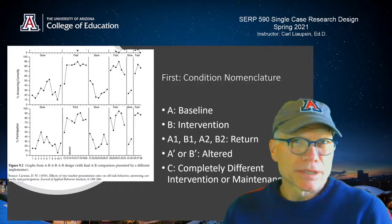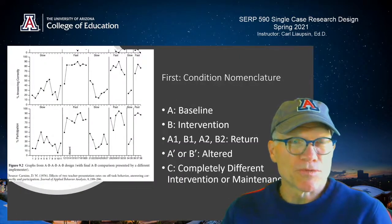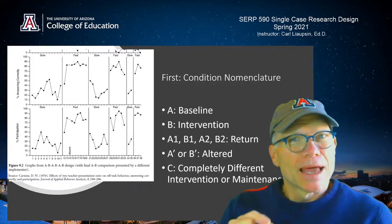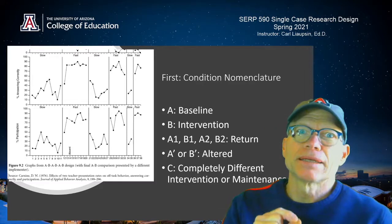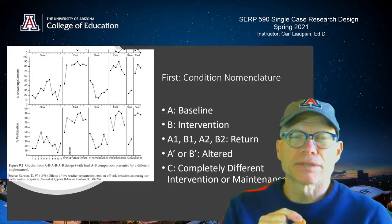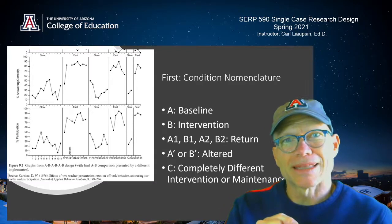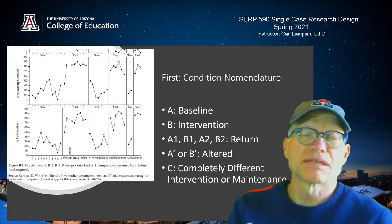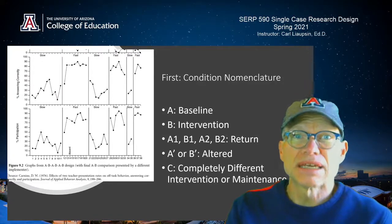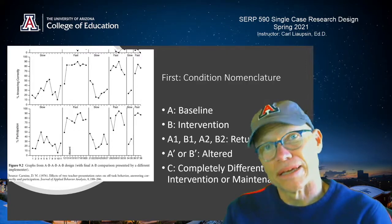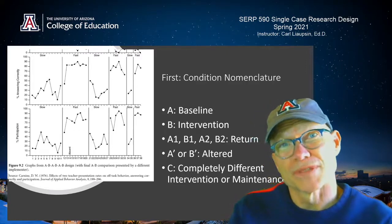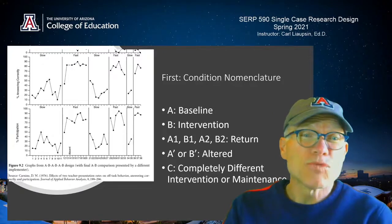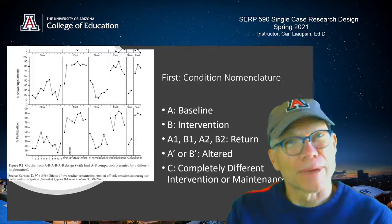First, let's talk some basic nomenclature, and we haven't done this before, so it's good to get it out on the table. Baseline in single-case research design is referred to as the A condition — A is baseline. B is intervention, or a change in the conditions. A1 is the first baseline.